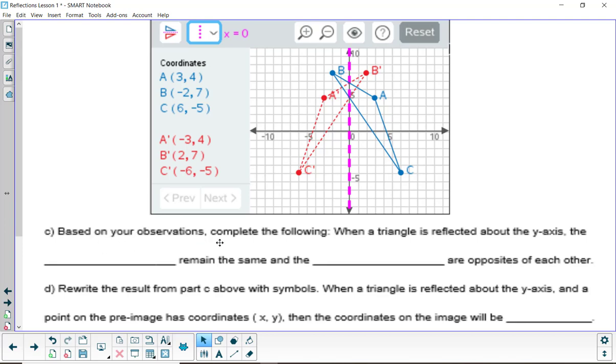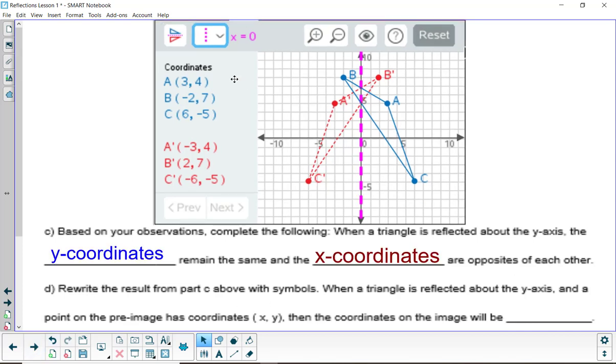So based on your observations, complete the following. When a triangle is reflected about the y-axis or the line x equals 0, the what remains the same and the what are opposites of each other. And in this case, the y-coordinates remain the same but the x-coordinates were opposites of each other.